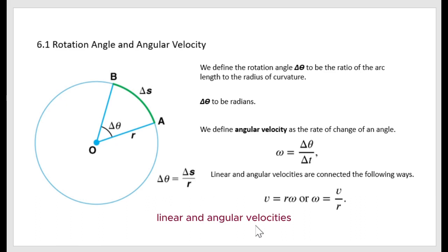Linear and angular velocity are connected the following way. Linear velocity v equals radius r times angular velocity omega, or omega equals velocity divided by radius.